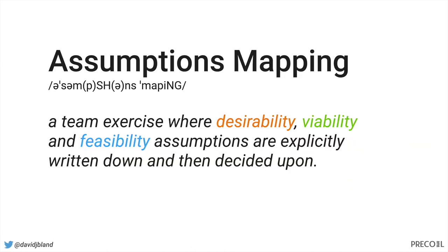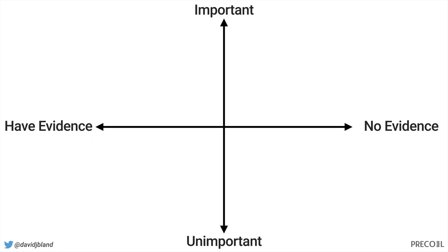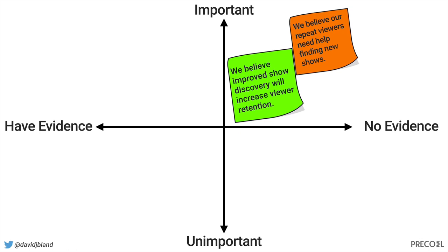Basically what I do is assumptions mapping. I draw out a line and say: 'have evidence' vs. 'no evidence,' and 'important' vs. 'unimportant.' As a team we ask: do we have any evidence that our viewers need help finding new shows? Nope — well, that's pretty important, and if that fails, it doesn't matter what else we do, so we should go find out. Then: we believe improved show discovery will increase viewer retention — we might have a little data on that, mostly from looking at competitors.